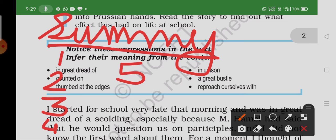M. Hamel made the announcement that it would be the last French class. Franz realized what was put up on the bulletin board—that he did not know his own language—and regretted why he had not learned his lessons seriously.